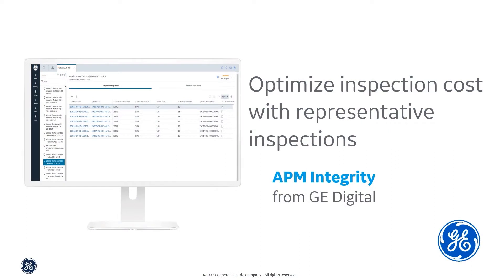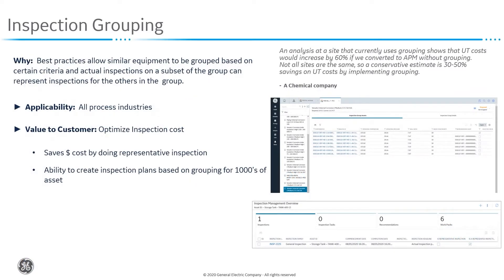Hello and welcome to the session where we'll talk about a new feature in RBI 580 which will help optimize inspection cost by carrying out representative inspections. Best practices allow similar equipment to be grouped based on certain criteria like damage mechanism, equipment type, and risk category, and it also allows actual inspections on a subset of that group which can represent inspections for the other equipment in the same group.